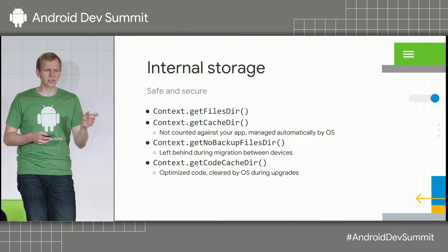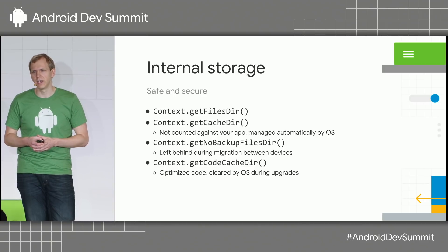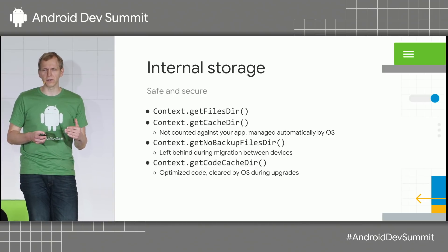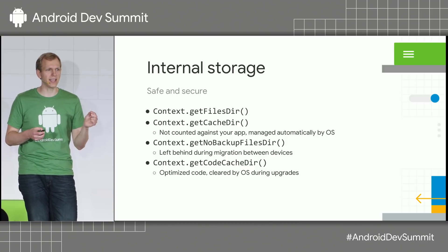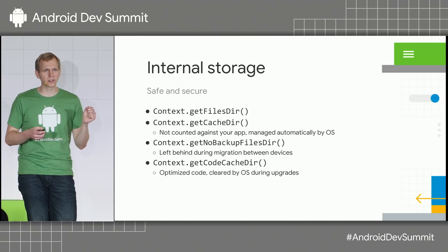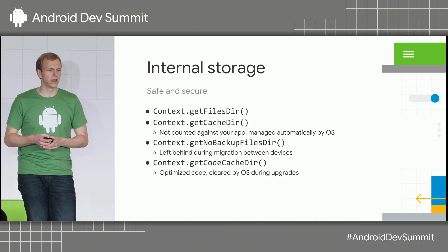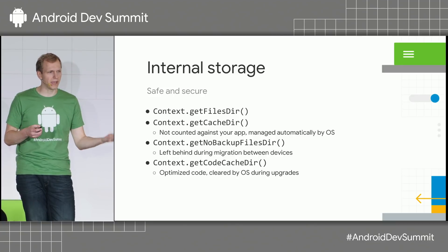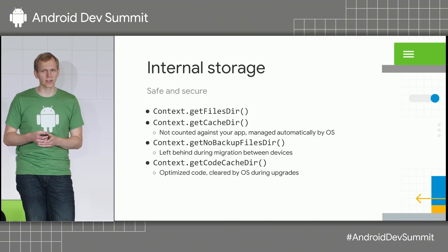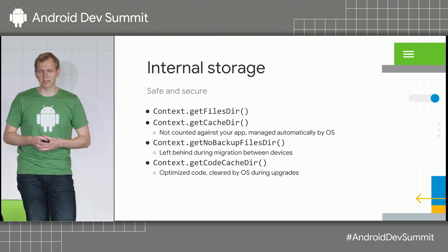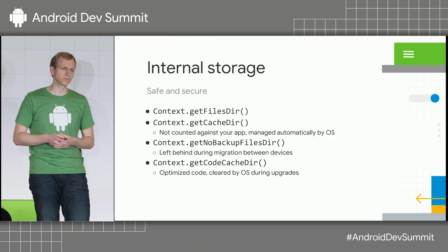Another directory is getNoBackupFilesDir. This can be useful if you have things like cloud messaging tokens that you want to renew when your app migrates between devices. If the device goes through a backup and restore phase, those files stored in that directory won't be carried across the backup.